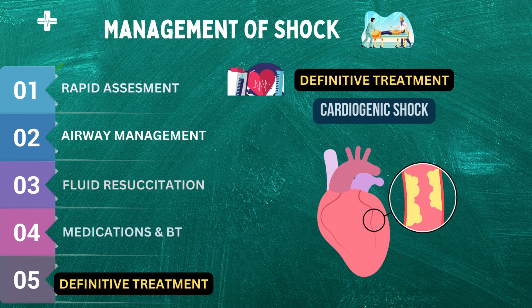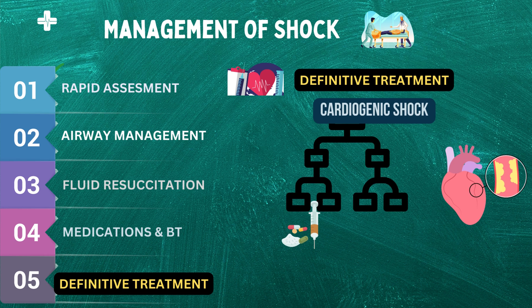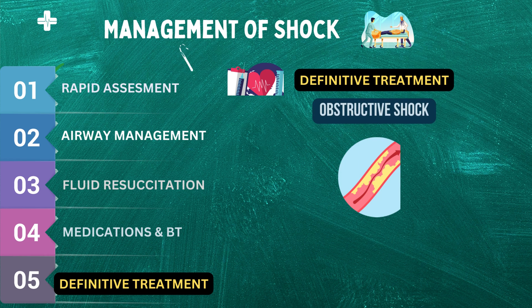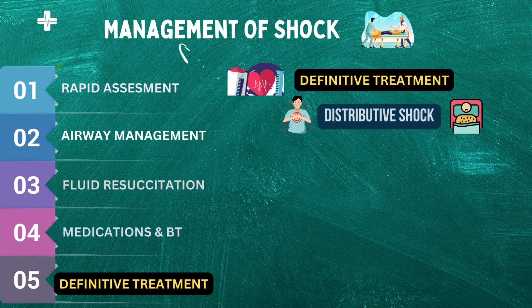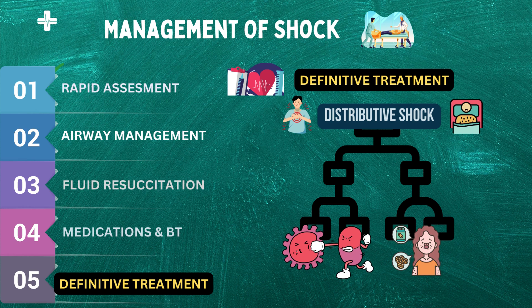In cardiogenic shock caused by a heart attack, the definitive treatment would be to restore blood flow to the affected area of the heart through medication or angioplasty. In obstructive shock caused by a blockage such as a pulmonary embolism, the definitive treatment would be to remove the blockage through medications, catheter-based interventions, or surgery. In distributive shock caused by sepsis or anaphylaxis, the definitive treatment would be to treat the underlying infection or allergic reaction through antibiotics, antihistamines, or other appropriate medications.